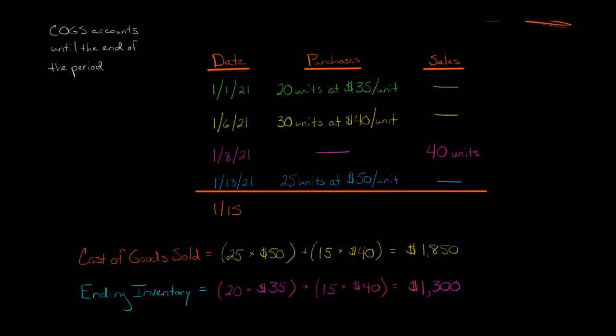If we look at the ending inventory, the ending inventory is basically the opposite because the first purchases are going to be the ones that are still in the ending inventory because they haven't flowed through cost of goods sold yet. So we have 20 at $35 a unit, and then we have the remaining 15 that are going to be in ending inventory at $40 a piece. So that leads to $1,300 in ending inventory.